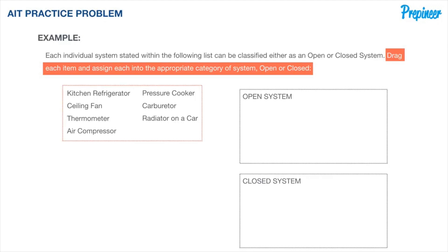We do this by clicking on any of these systems and dragging them into the designated areas that have been outlined for us. This problem is designed to mimic what you could expect as a typical drag-and-drop problem, requiring you to click and drag each individual system into its appropriate category as either an open or closed system.